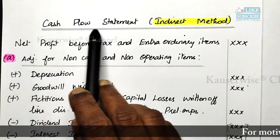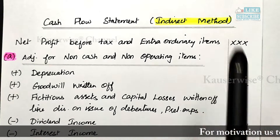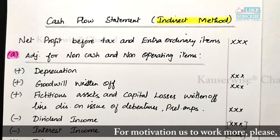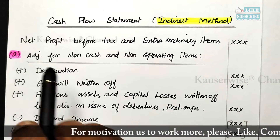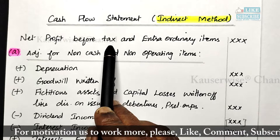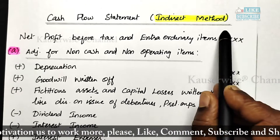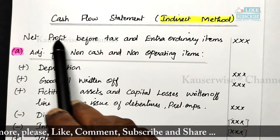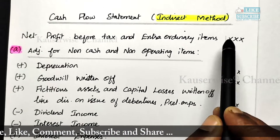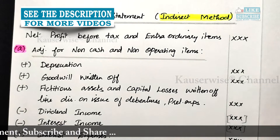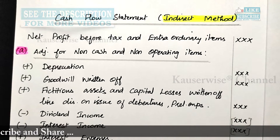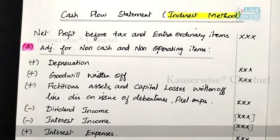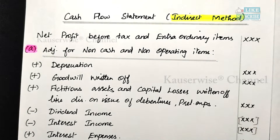This is the format of cash flow statement indirect method. We have seen this format in detail in the first video — you can find the links in the description box. In this format, the first starting point is net profit before tax and extraordinary item. With this only, you can prepare the cash flow statement, after which you have to do various adjustments.